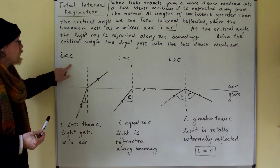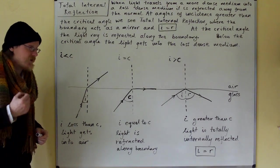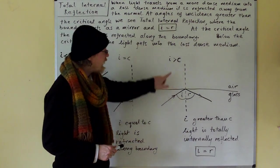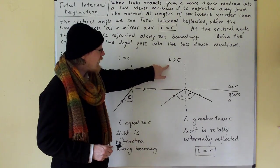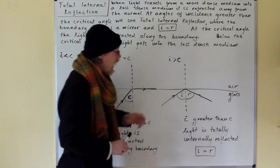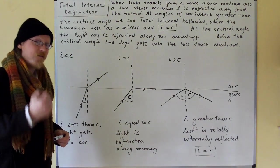Below the critical angle, this one here, the light gets into the less dense medium. Here it's refracted along the boundary. Now here we have our angle of incidence is greater than the critical angle and so it can't be refracted and what happens instead is it is reflected.